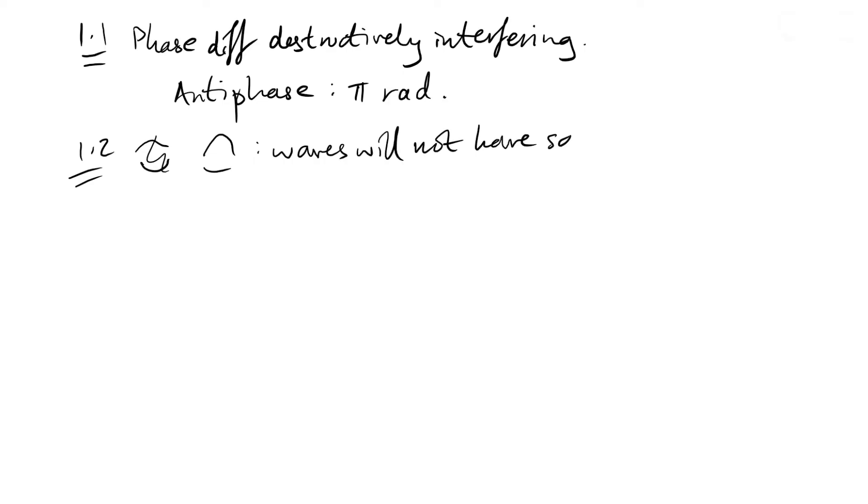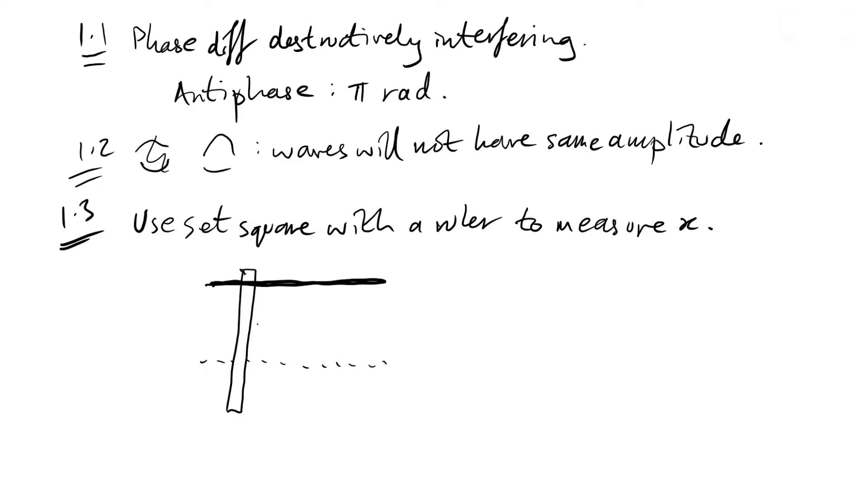1.3, we're being asked how we could make sure that our measurement is parallel to the marked line. As per usual when it comes to measuring anything far away from another thing, we use a set square with a ruler to measure x. So this is our dotted line and that's where our reflector is. We have a ruler and then we could have a set square with that to make sure that the ruler is perpendicular.